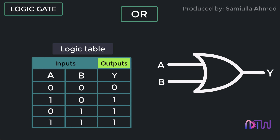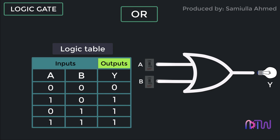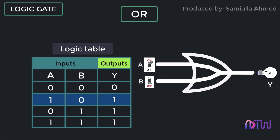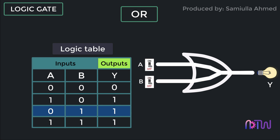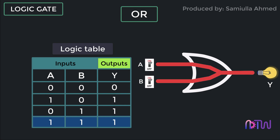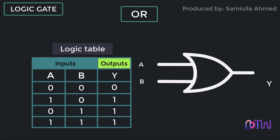For ease of remembering how the OR gate works, you can imagine it as a simple bulb with two switches. When switch A is on and switch B is off, the bulb will glow since it is getting the required supply. If switch B is on and switch A is off, the bulb will still glow. And if both switches A and B are on, the bulb will glow. This is how the OR gate works.